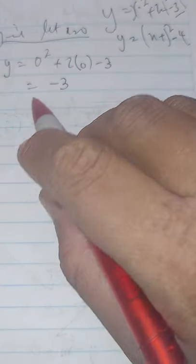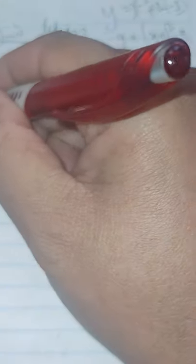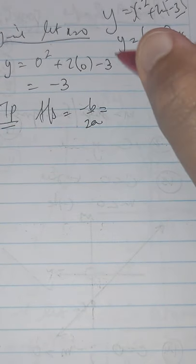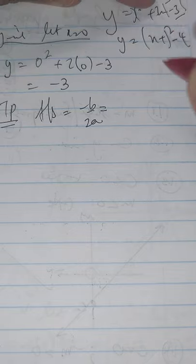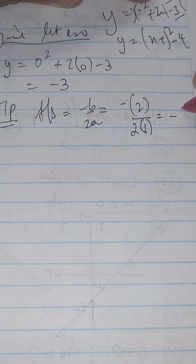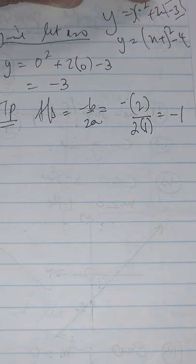Then bullet 4 is your turning point. How do you work out the turning point? It's basically your axis of symmetry, which is minus b over 2a. Where your b value is 2, so it's going to be negative 2 over 2 times a, which is 1, which gives you negative 1.